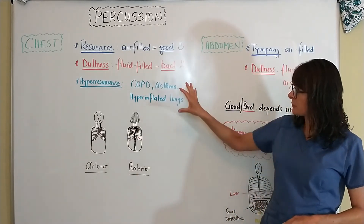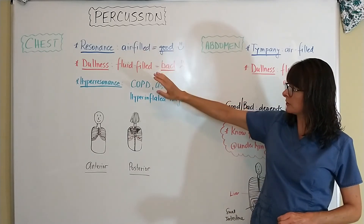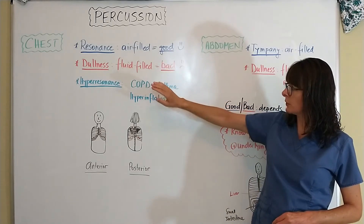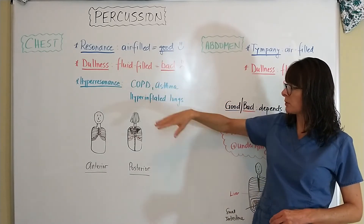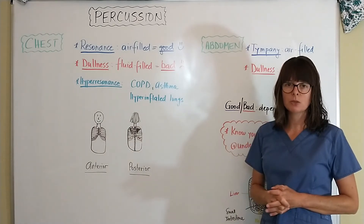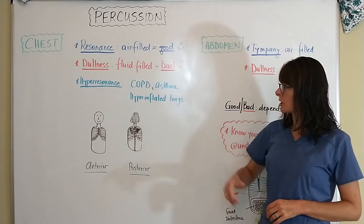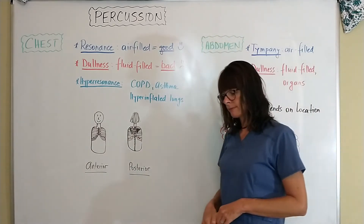So for the chest we have: resonance — air-filled; dullness — fluid-filled; and hyper-resonant — hyperinflated lungs due to CO2 retention from certain conditions.